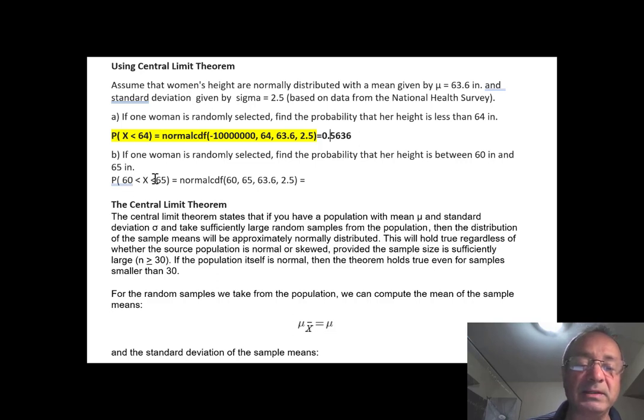We need the probability of X between 60 and 65, so it's normal CDF. Your lower bound is 60, your upper bound is 65, your mean is 63.6 and 2.5. Let's see what my calculator gave me: 0.6373. Round it to four decimal places, so 0.6373.